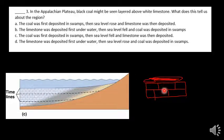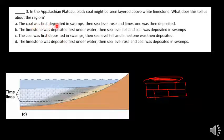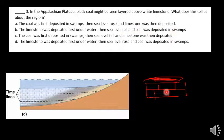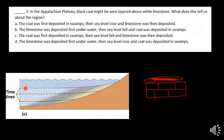So in the same area we went from deep marine to land conditions, because the stuff on top is younger. The limestone was deposited first underwater. Then sea level fell and coal was deposited in swamps. That's the correct interpretation — limestone is deposited underwater first, and then when sea level falls, this is all exposed land where swamps form, and so the coal forms on top of that.